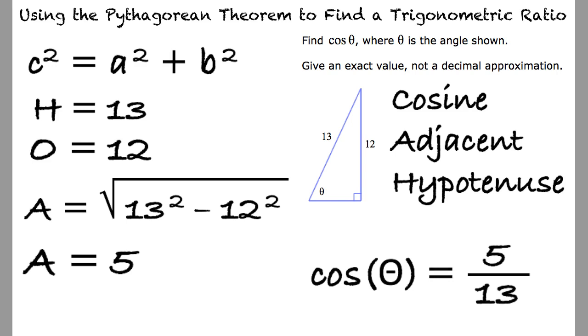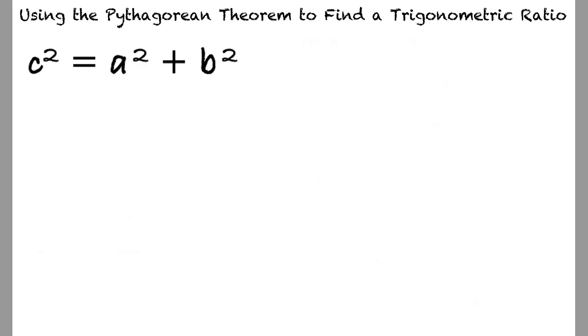I think I understand this topic now, but let me quickly summarize just to be sure. We begin by identifying the values given and substituting these values into the Pythagorean theorem. Next, we solve for the missing value and use the mnemonic SOHCAHTOA to identify which two sides we use to solve for the value of the trigonometric ratio in question. That's right.